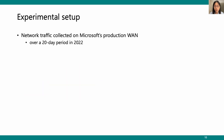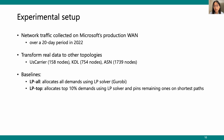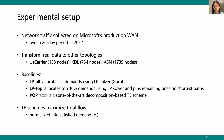Our evaluation uses network traffic from Microsoft Production, transformed into topologies of various sizes. Baselines include LP-all, the full LP solver solution; LP-top, which allocates the top 10% of demands with an LP solver and pins the remaining demands onto the shortest path; and POP from SOSP'21, a state-of-the-art decomposition-based TE scheme. Our objective is to maximize total flow, normalized as the percentage of satisfied demand.